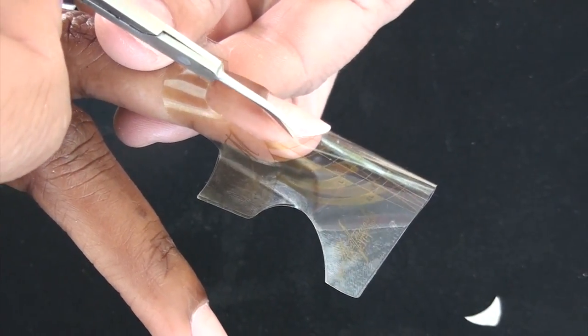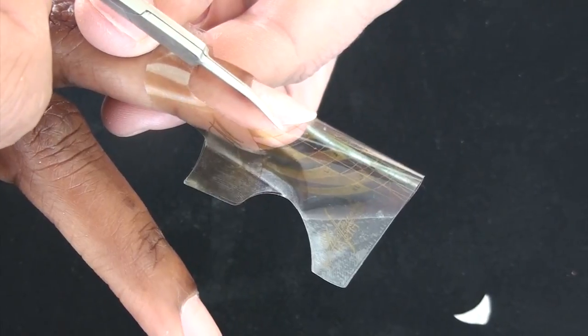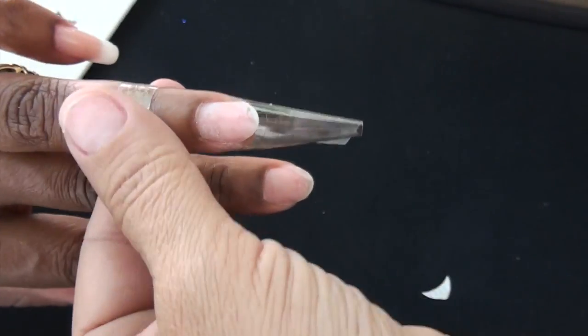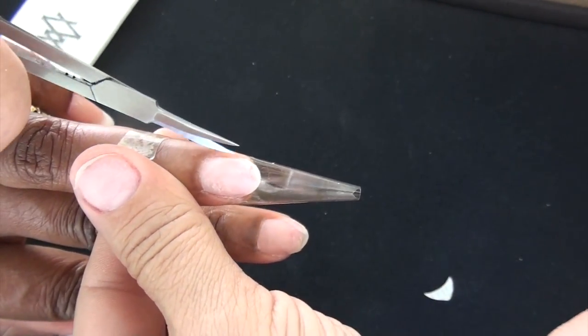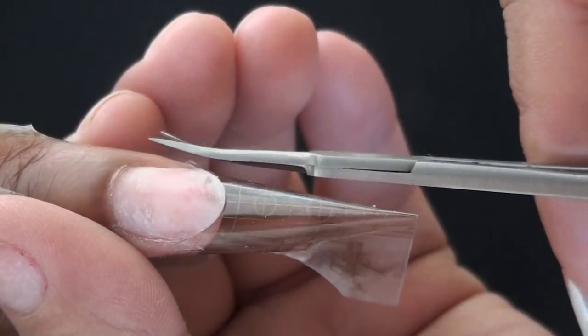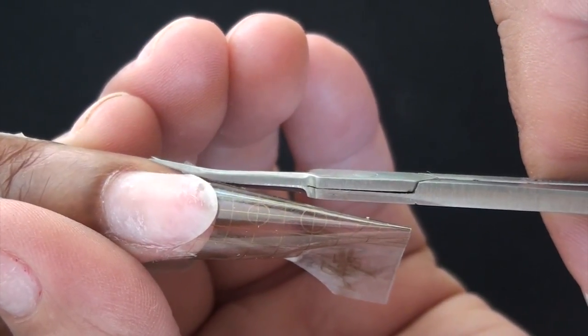Doing a relief cut is also very important for your C curve. So again, taking your Masterworks Refining Scissors and just making a tiny cut down each sidewall. This will ensure that the form actually fits down and isn't stopped by the edges of your finger.